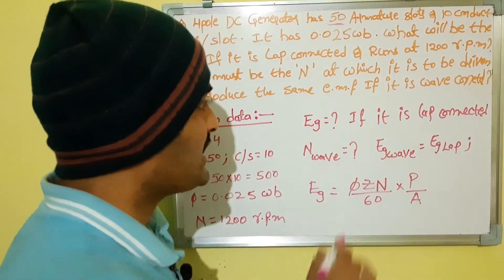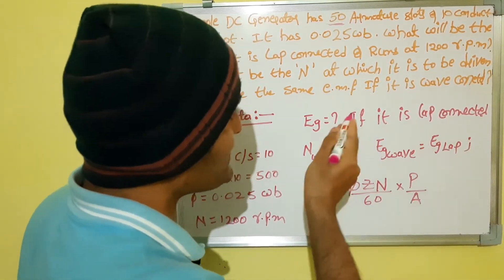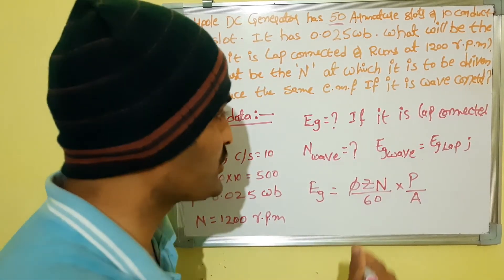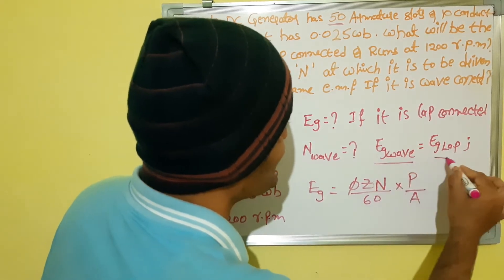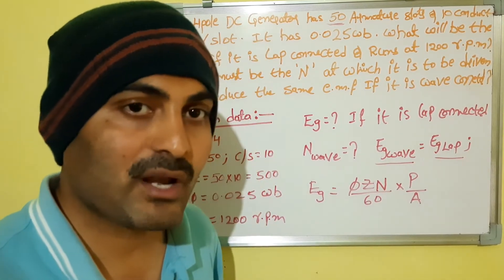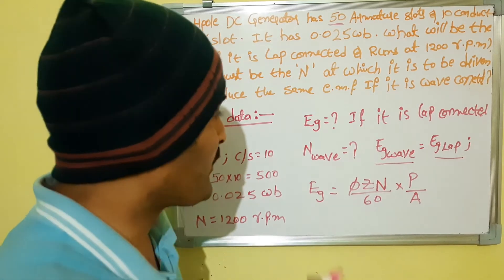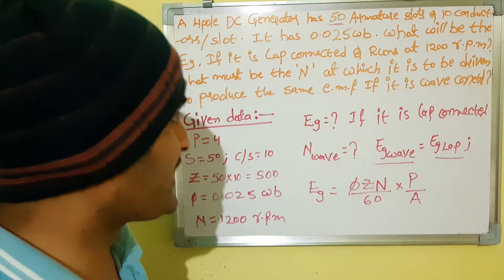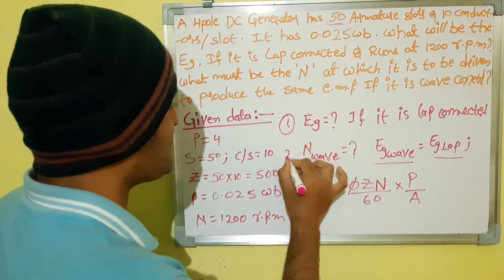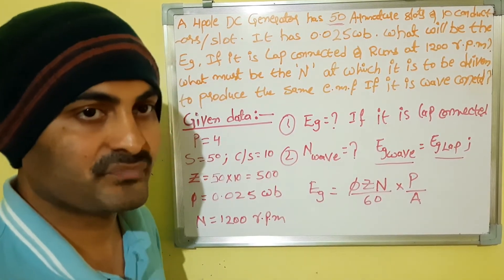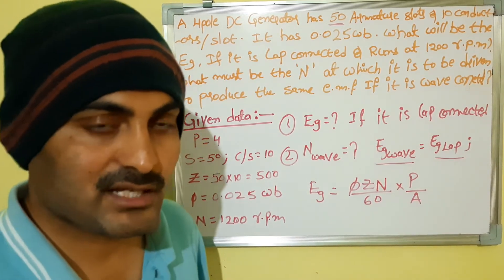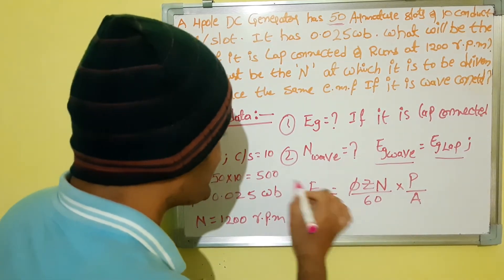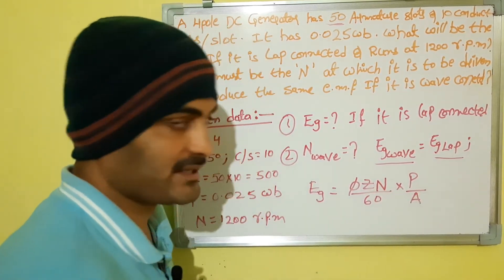After this, for the wave connection, we need to find the speed that induces the same EMF as the lap connection. In the previous class, we derived the EMF equation. The generalized equation: generated EMF is equal to φZN/60 into P/A.